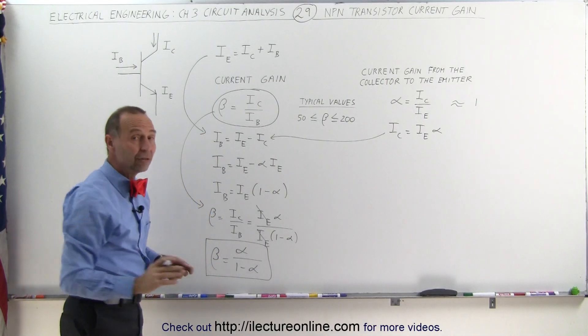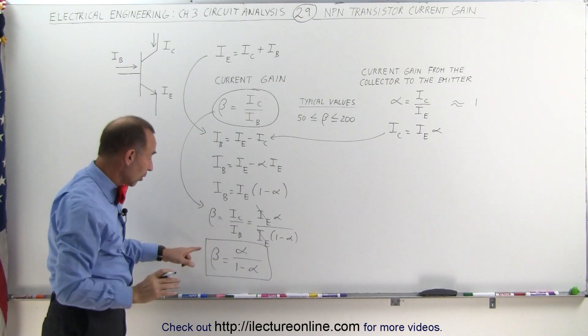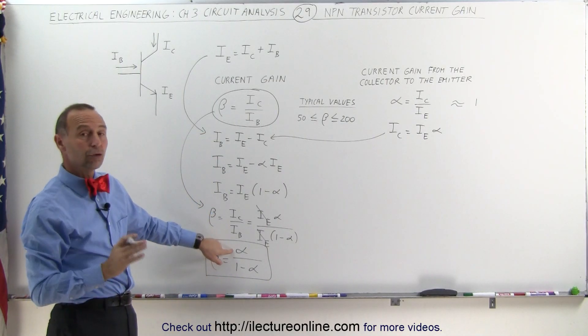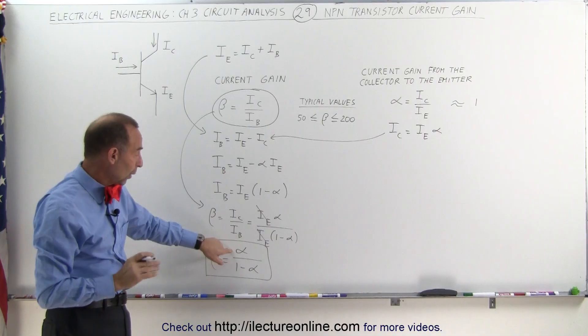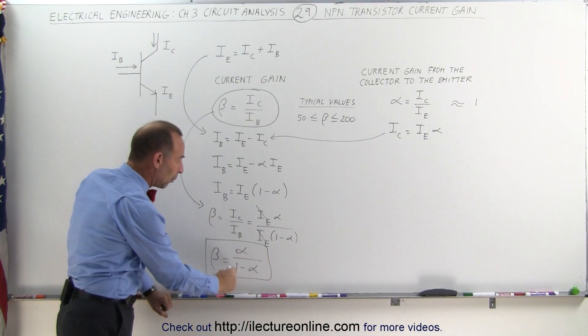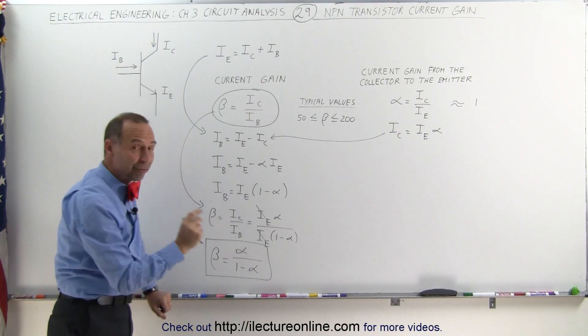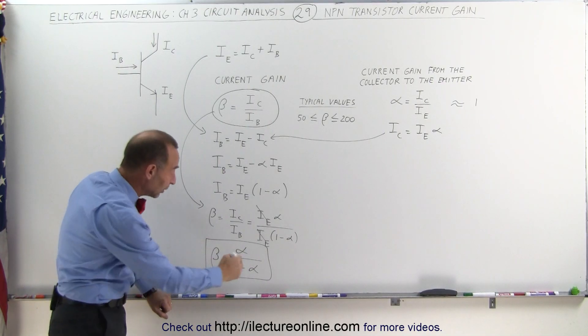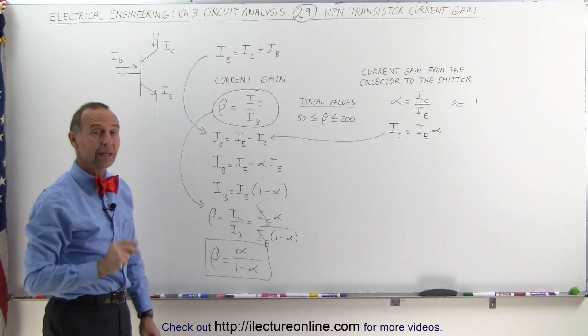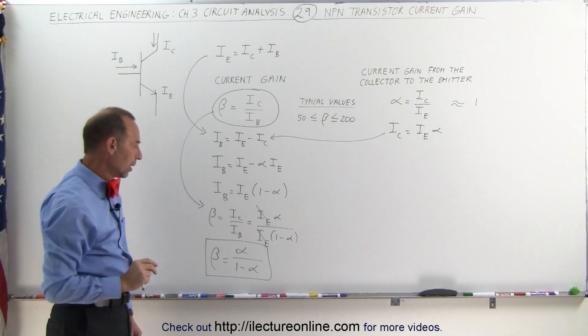Beta is a very large number, while alpha is a number close to 1 but not quite 1. So 1 divided by (1 minus a number very close to 1) gives us a big number. You can see that this relationship works quite nicely.